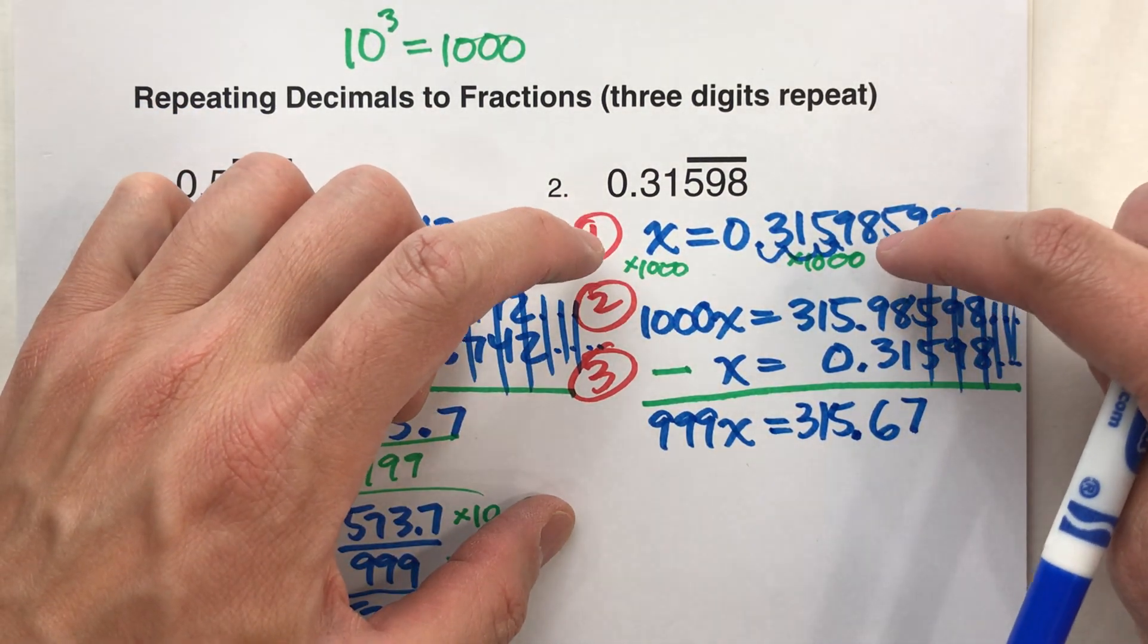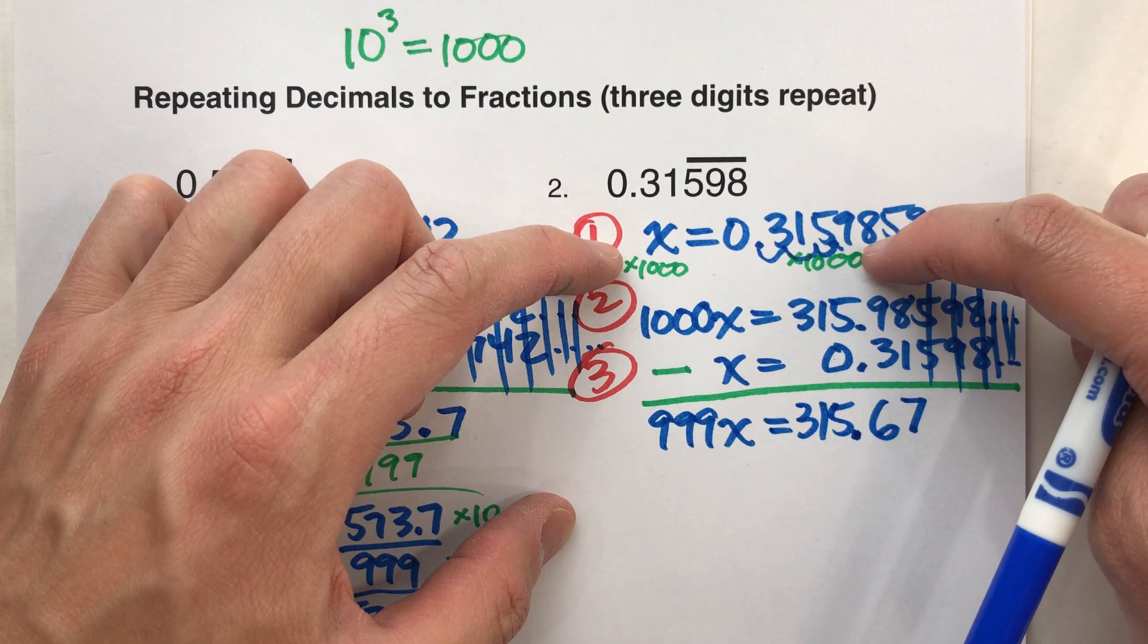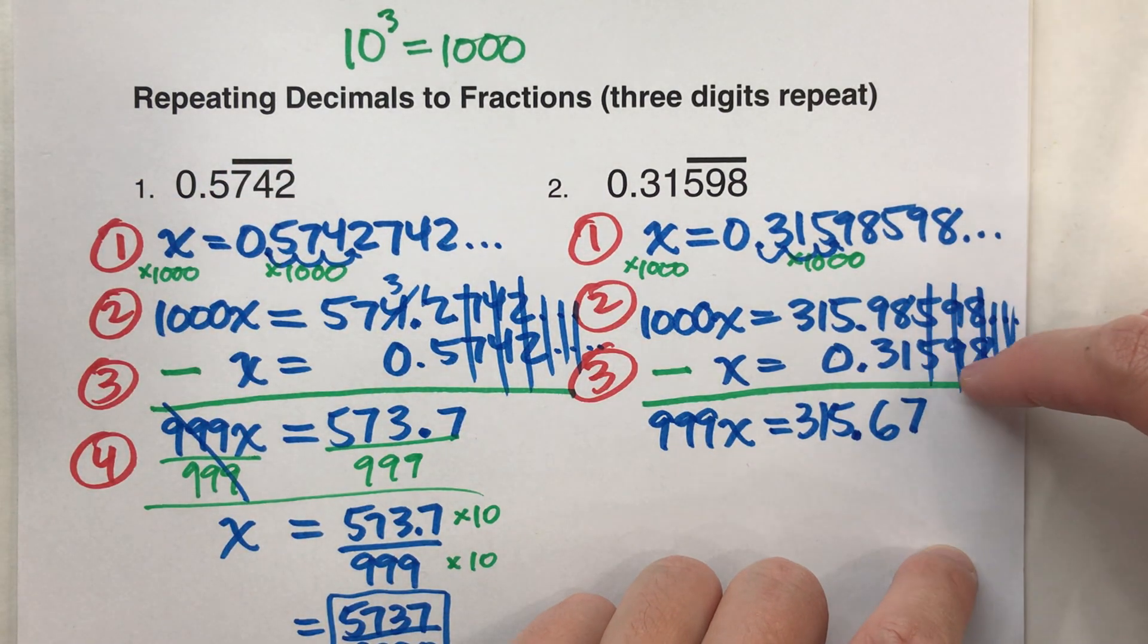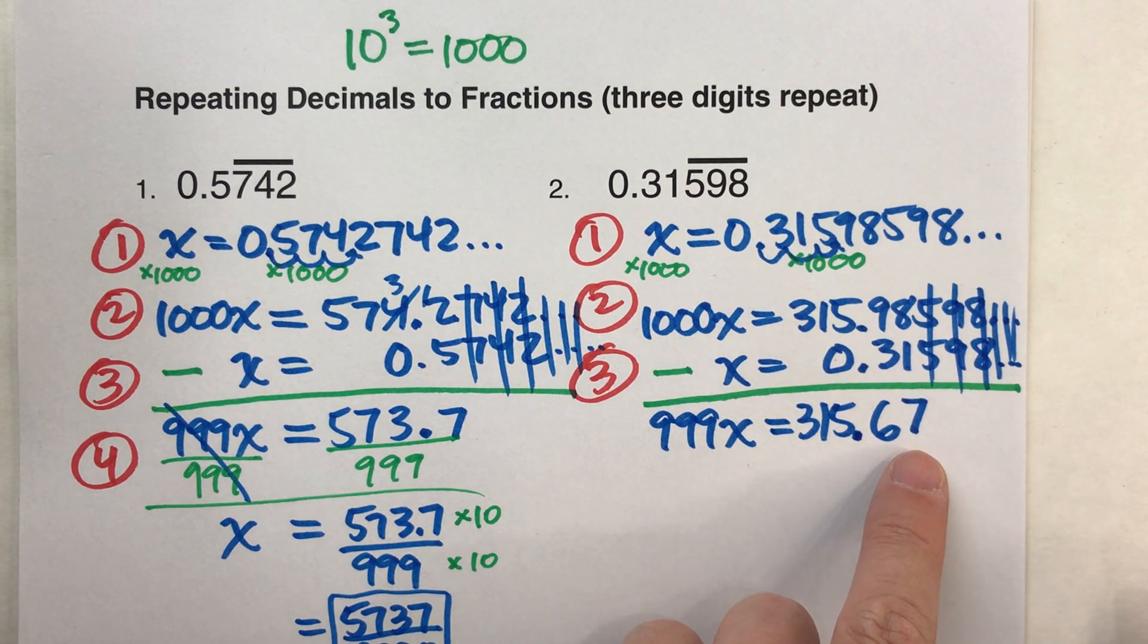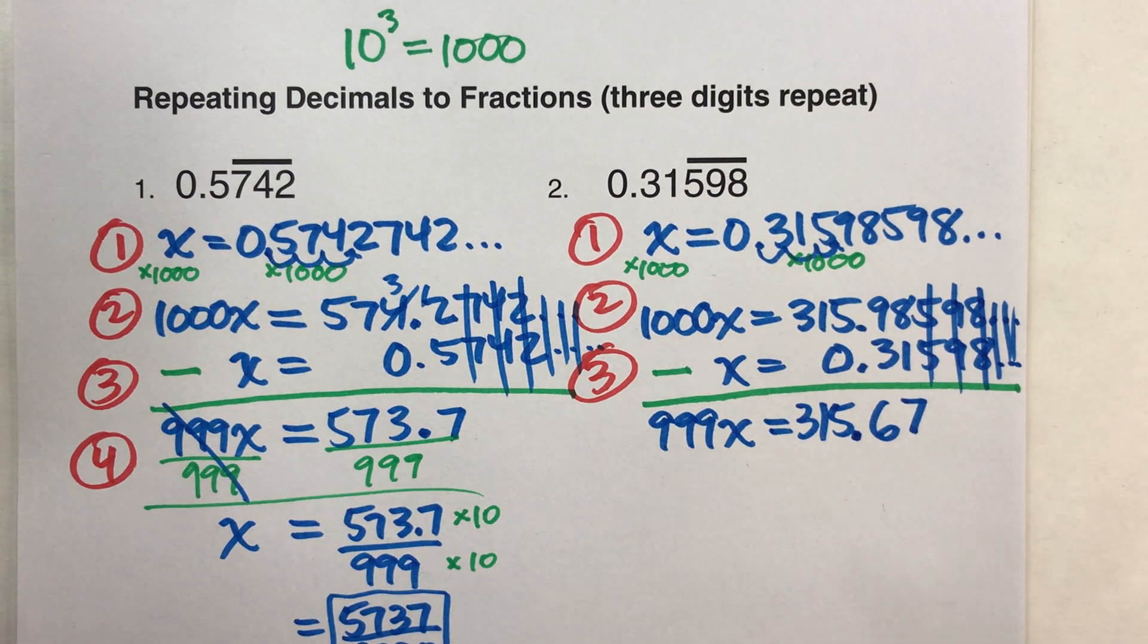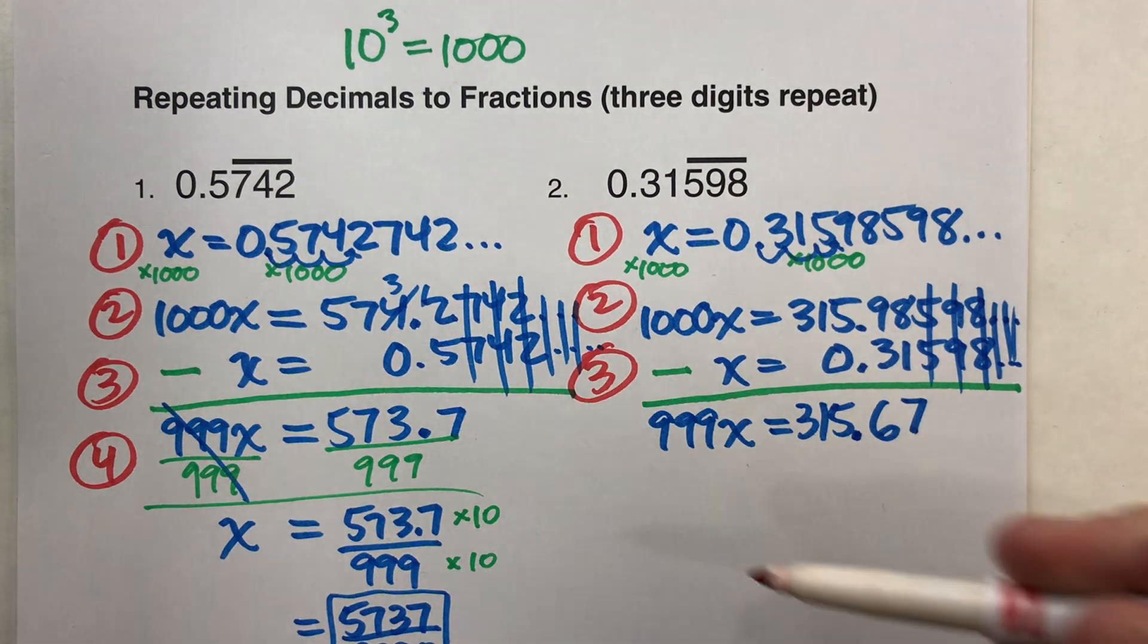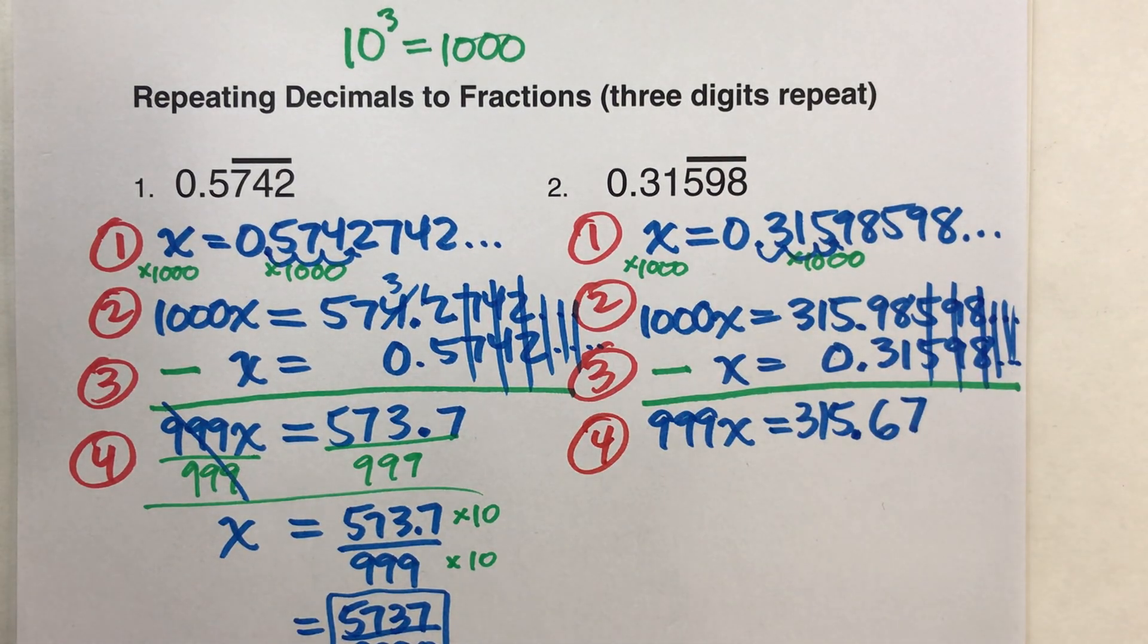So, again, because we strategically multiplied both sides by 1,000, those repeating digits all matched up when I subtracted them, and so I'm left with no more repeating digits anymore. We're almost done, step 4, solve for x, simplify your fraction, so let's do that.